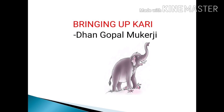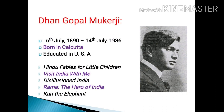Before learning the lesson, let's have a glimpse about the author. Dhan Gopal Mukherjee was an Indian writer who was born on 6th July 1890 in Calcutta. He died on 14th July 1936. He was educated in the USA and wrote many books: Hindu Fables for Little Children, Visit India With Me, Disillusioned India, Rama the Hero of India, and Kari the Elephant. Today's lesson is extracted from the book Kari the Elephant.